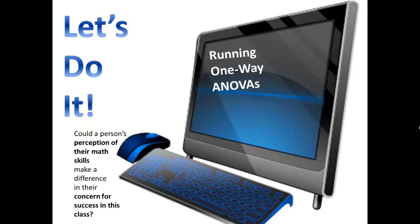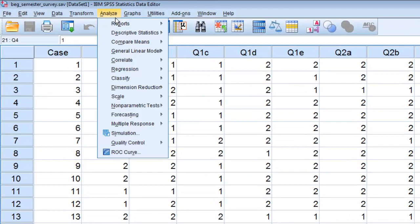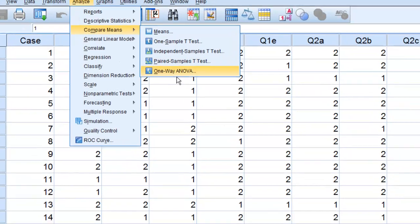So let's do it. Could a person's perception of their math skills make a difference in their concern for success in this class? So again, the independent variable is perception of math skills, and the dependent variable is concern for success in this class. Here we are in our data set. We'll do analyze, compare means, one-way ANOVA.